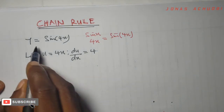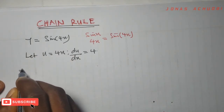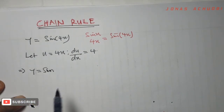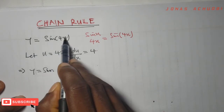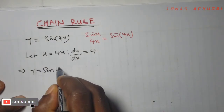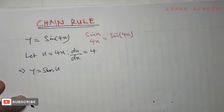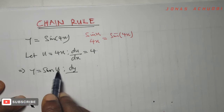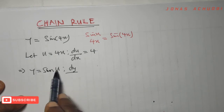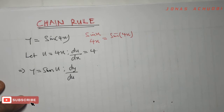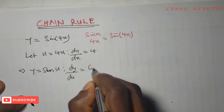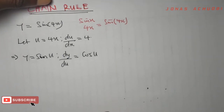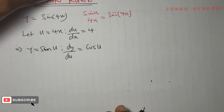Having done that, this function y now becomes sine u, since we said let u equal 4x. We now differentiate y with respect to u, not x, because here we have y and u. So we perform dy/du, and that gives us cosine u. Recall that when we differentiate a sine function, we get a cosine function.